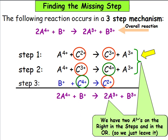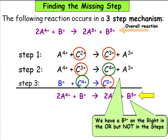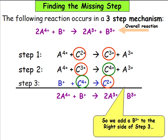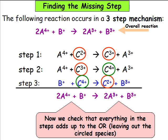We have two A3+ on the right in the steps and in the overall reaction, so we leave A3+ the way they are. We have a B3+ on the right in the overall reaction but not in the steps, so we add a B3+ to the right side of step 3. We now check that everything in the steps adds up to the overall reaction, leaving out the circled species.